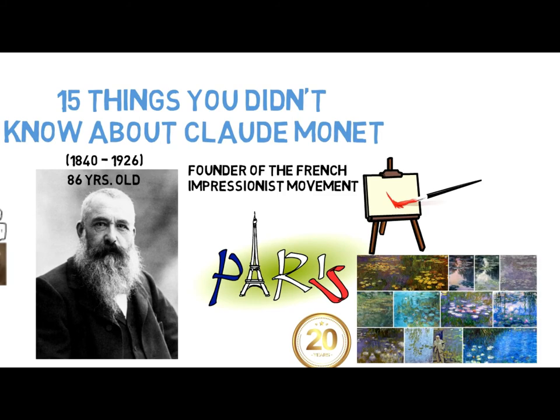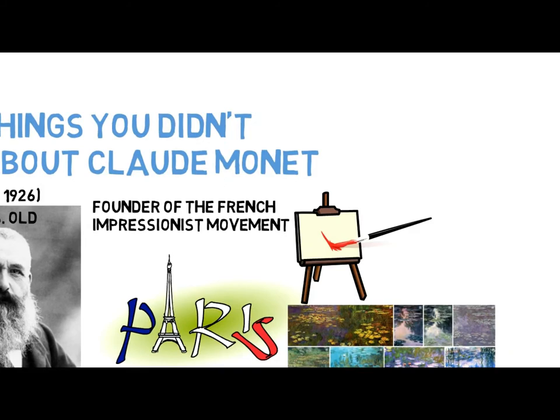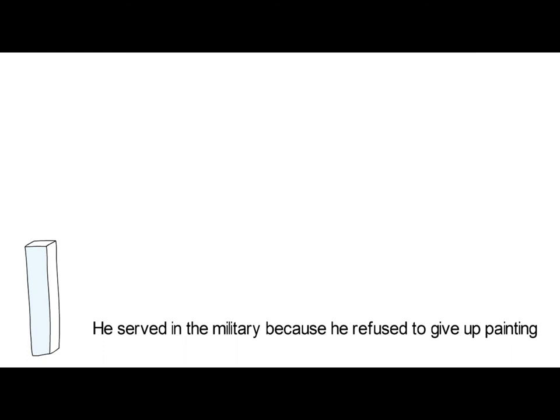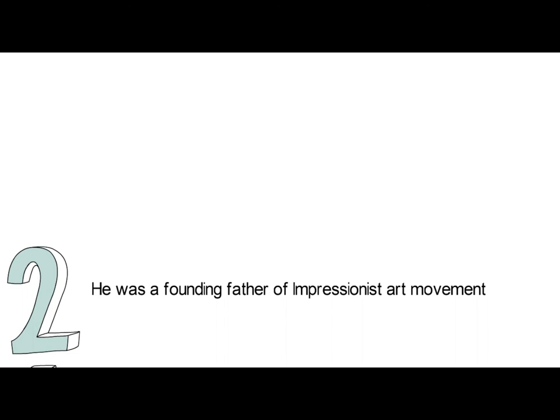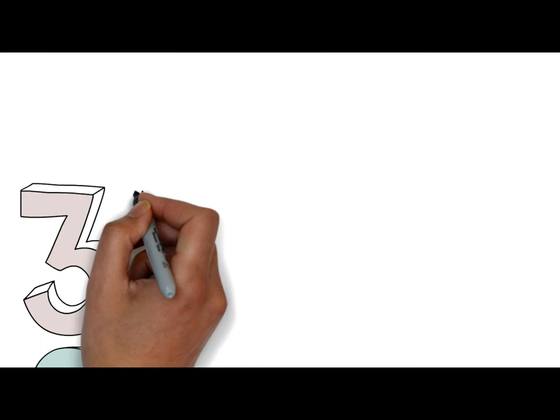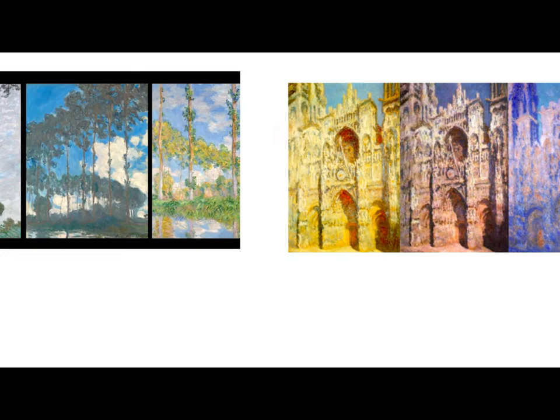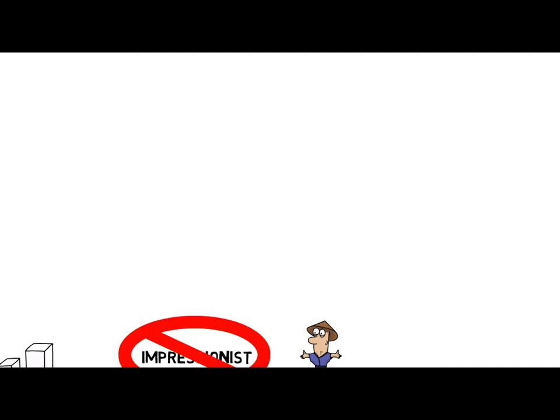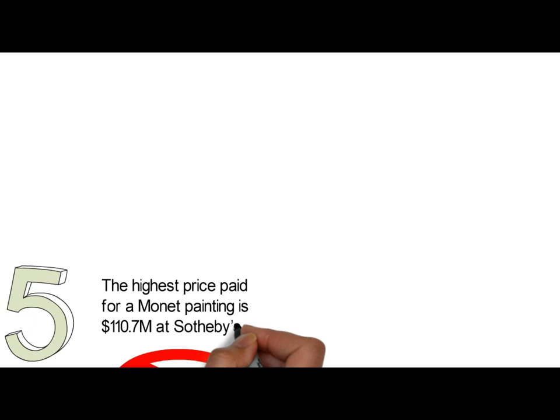Are you ready to know more about the founding father of Impressionism? Number 1: He served in the military because he refused to give up painting. Number 2: He was the founding father of the Impressionist art movement. Number 3: He liked to paint the same subject many times — over and over at different times of the day and different times of the year. His series subjects included haystacks, poplars, a ruined cathedral, water lilies, and morning on the Seine. Number 4: Like practically every artist, he went through a penniless period — when the Salon was not accepting his works or his fellow Impressionists'. Number 5: The highest price paid for a Monet painting is $110.7 million at Sotheby's, when one of his haystack paintings was sold at auction in September 2019 — ninth on the list of most expensive paintings.